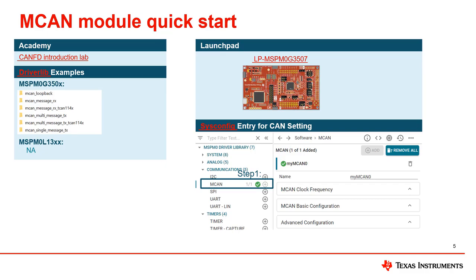If you want to customize the configuration of the MCAN module, it is recommended that you use the sysconfig graphical configuration tool as shown. With the corresponding module checked, the parameters are filled in and the code containing the MCAN configuration can be generated after compilation, significantly reducing your total development time.